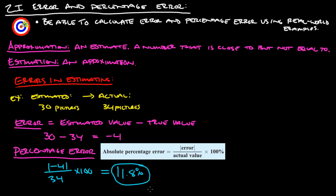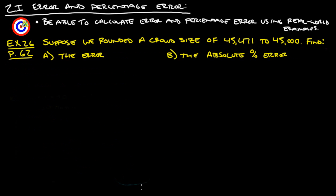Let's take a look at example 26 from page 62 in your book. Suppose we rounded a crowd size of 45,471 to 45,000. Find the error and the absolute percent error.